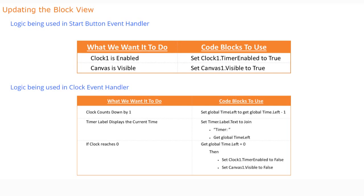Now we're ready to update our block view. We'll be focusing on two event handlers: the Start button and the Clock. For the Start button, we want to enable the clock when clicked and set our canvas to visible. For the Clock event handler, we'll have the clock count down by one, display the current time using the Timer Label, and if the clock reaches zero, set Clock One Timer Enabled to false and Canvas One visible to false.